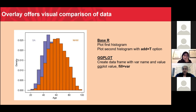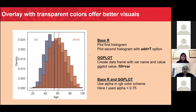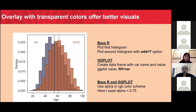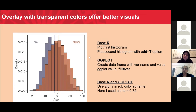What is happening here is the red plot is sitting on top of the blue plot, not allowing us to appreciate what is happening in the blue histogram, which represents the age at diagnosis distribution of South Asian women. This can be addressed by making the colors transparent using the alpha parameter in the RGB coloring scheme. With alpha equal to 0.75, we can now see the distribution of age at diagnosis for both populations clearly.